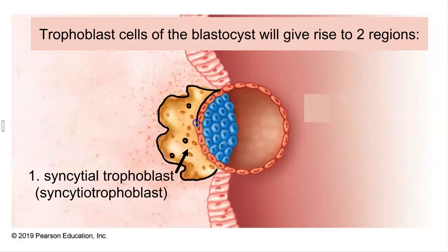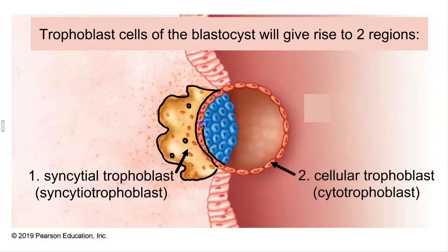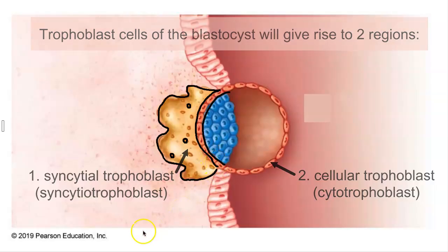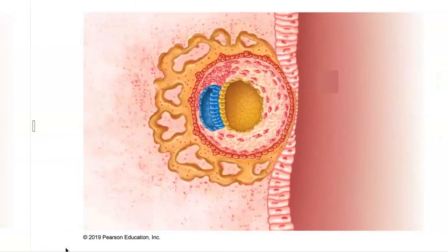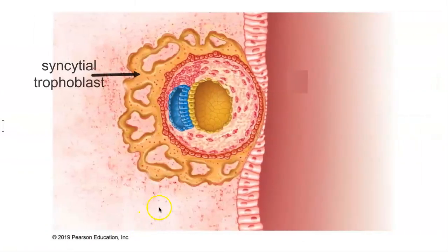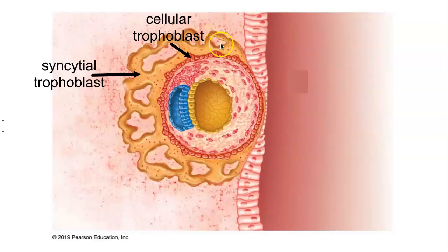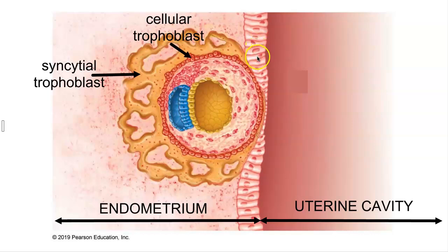At the same time, there remains a layer of individual trophoblast cells that retain their cell boundaries, surrounding the blastocyst cavity and the inner cell mass — that region is known as the cellular or cytotrophoblast. As implantation proceeds, the syncytial trophoblast and the cellular trophoblast continue to grow, and implantation is not complete until the conceptus is completely buried within the endometrium. We can see some of the surface epithelium from the endometrium starting to regenerate and cover the tracks where the conceptus entered.